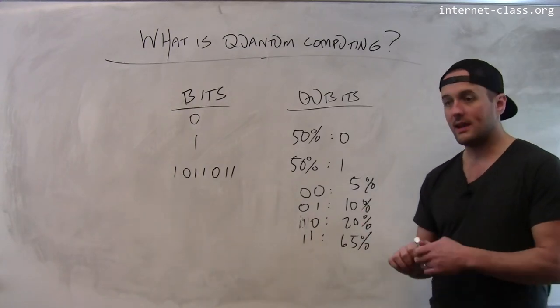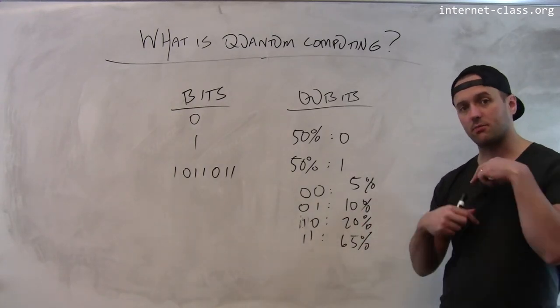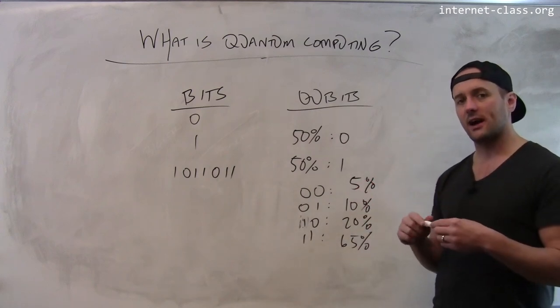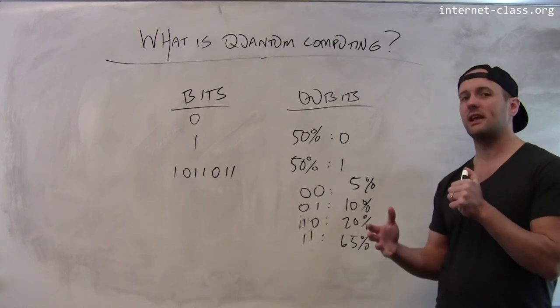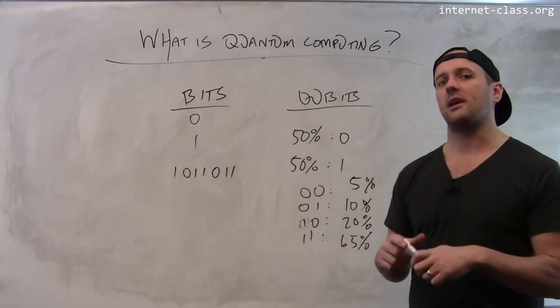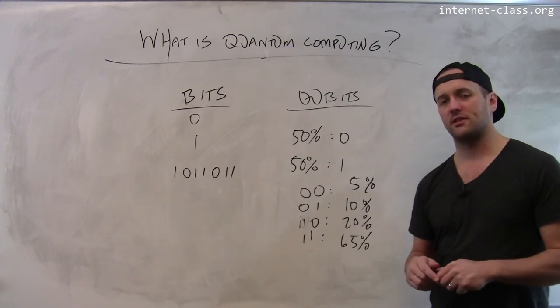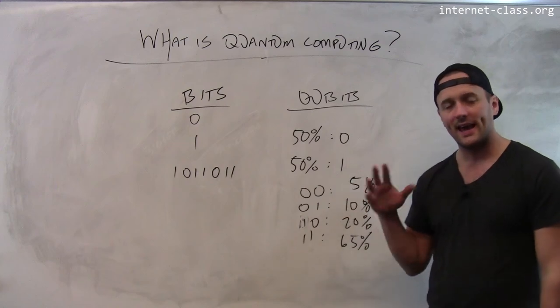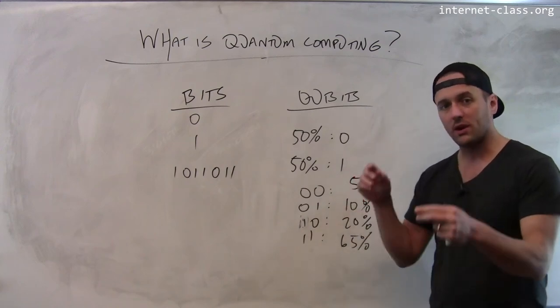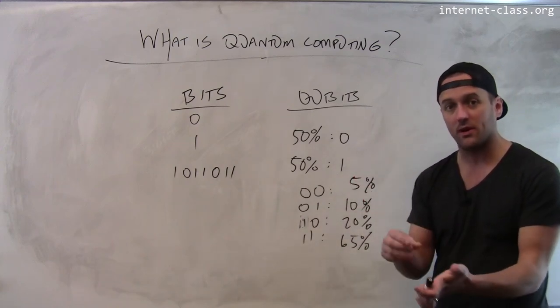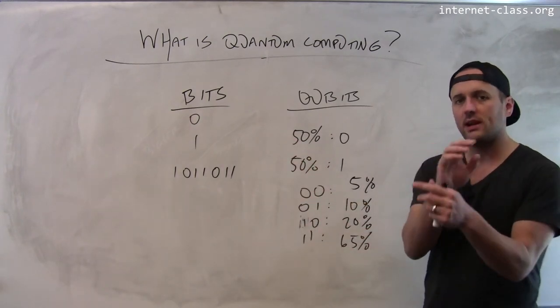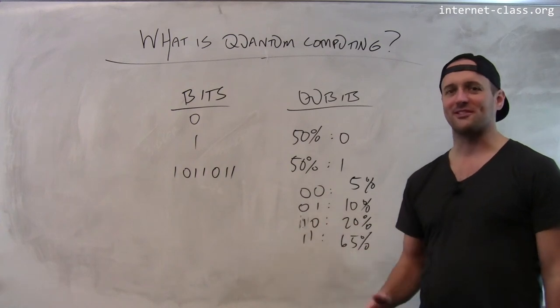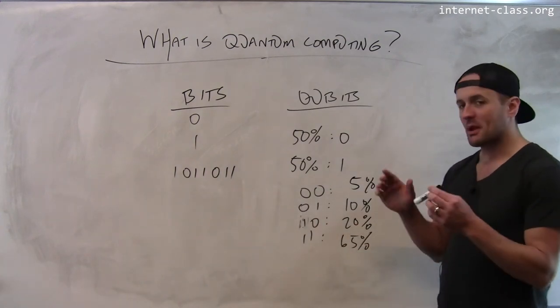As I manipulate these qubits, the probability that they're in any particular state changes. It's only at the end of the computation that I actually collapse the qubit into a particular state. In quantum mechanics, we refer to this as collapsing a particular particle's wave function. The wave function describes where the particle is in space. At some point when I observe the particle, I know exactly where it was at that moment, and the wave function collapses to a particular point and then begins to spread out again.